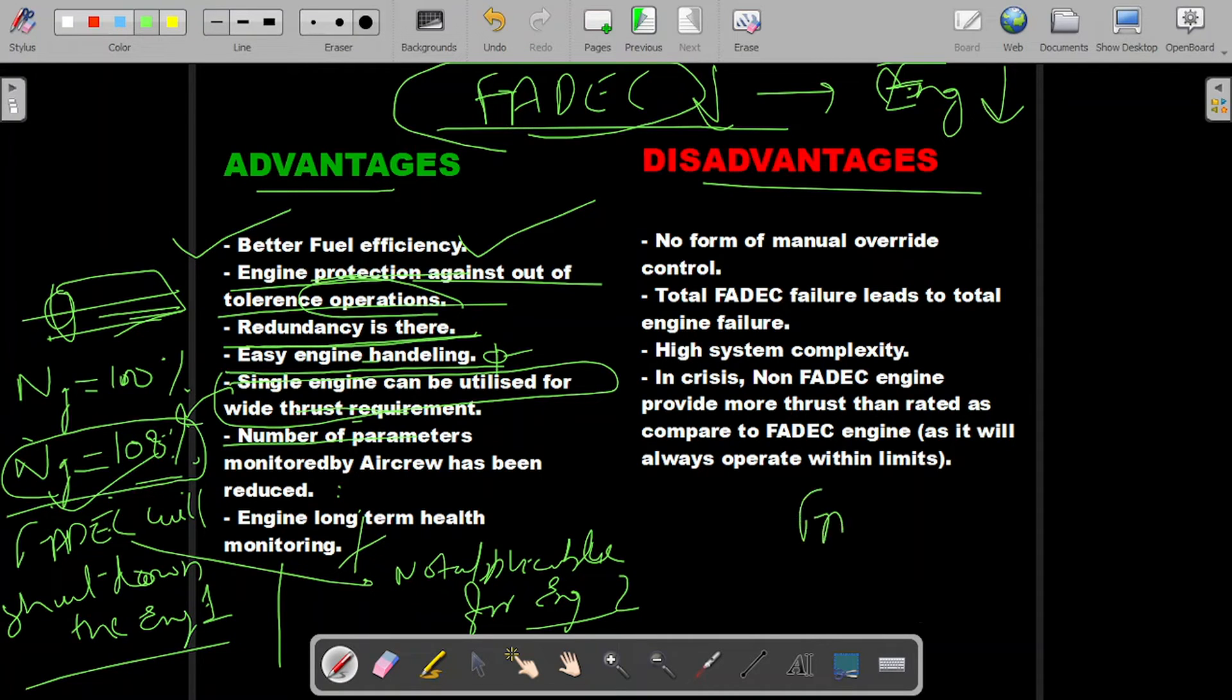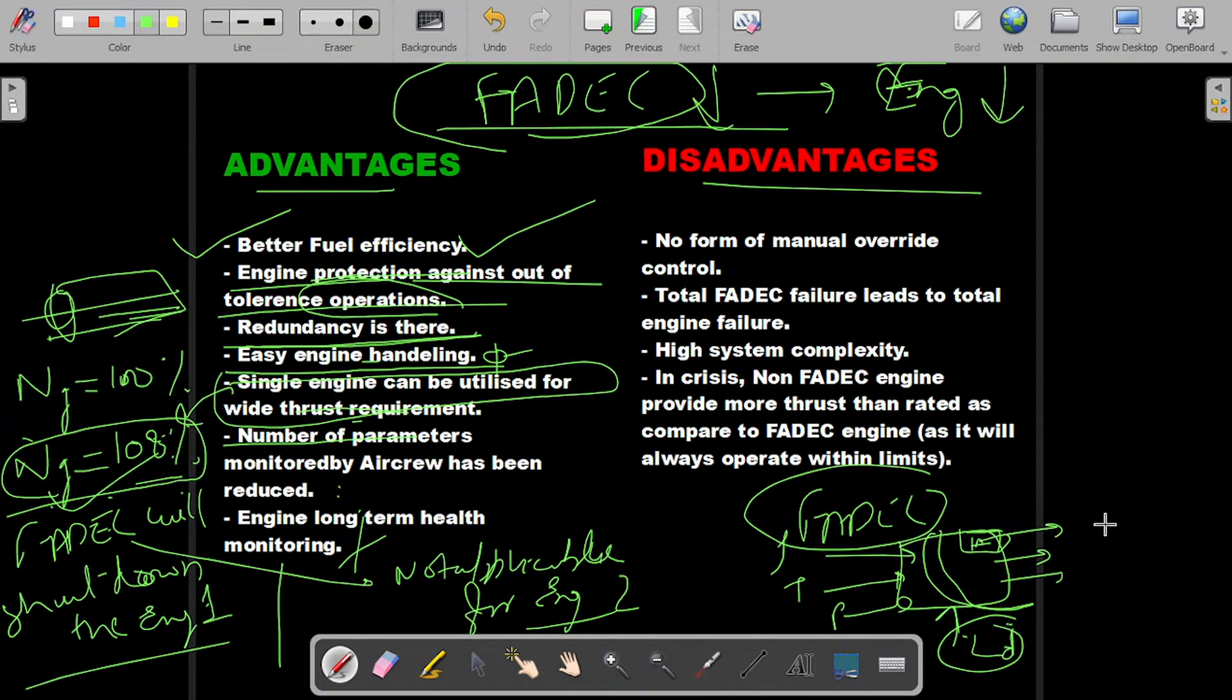Engine long-term health and monitoring. There is a FADEC system already monitoring so many parameters: density, temperature, pressure, lever throttle position. Since it is already measuring so many parameters, there is a part of it which records all these parameters. In case of any incident or accident, FADEC can be utilized to recheck what all parameters were there and how the aircraft or engine behaved. This is HUMS - Health and Usage Monitoring System.